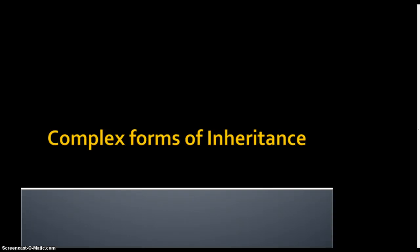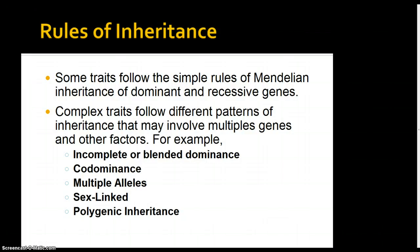Today we're going to talk about complex forms of inheritance. We've been talking about Mendelian genetics and Mendelian inheritance, where we have dominant and recessive traits and genes. In dominant, one allele hides or covers the other, and recessive is that allele that is hidden or covered if there's a dominant present. Today we're going to look at a couple of different types of forms of inheritance that are a little more complex and don't follow the rules of Mendelian genetics.